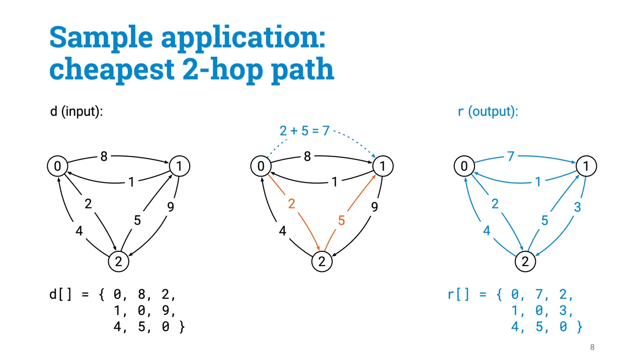Let's return to our sample application, finding the cheapest path with at most two hops. To keep things simple, let's say n is 1000. Now our input and output matrices have dimensions 1000 by 1000. So 1 million input values, 1 million output values.